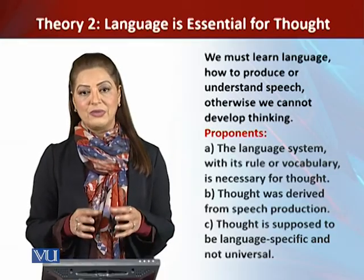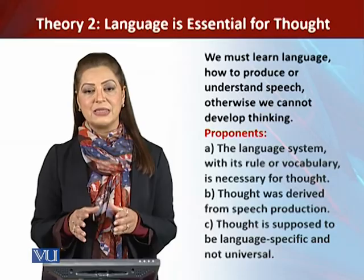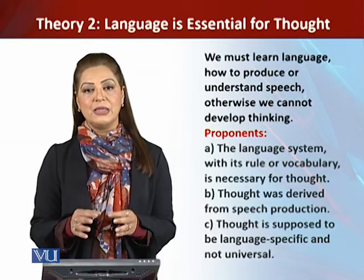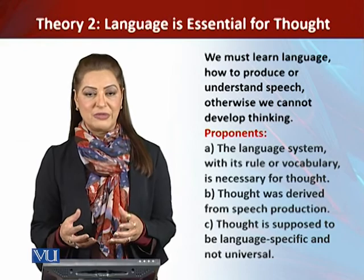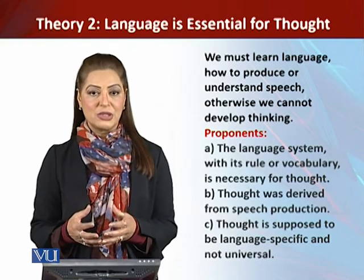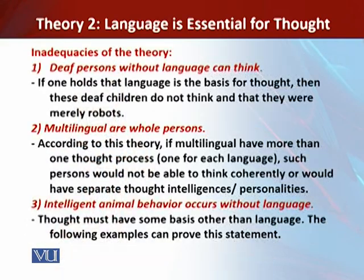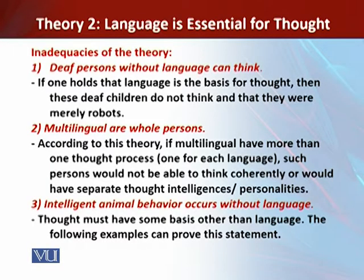According to this theory, there is no such thing as universal specificity as far as languages are concerned. Now, the inadequacies of this theory: number one states that deaf persons without language can think. If one holds that language is the basis for thought, then deaf children who lack language would not think — they would merely be robots.